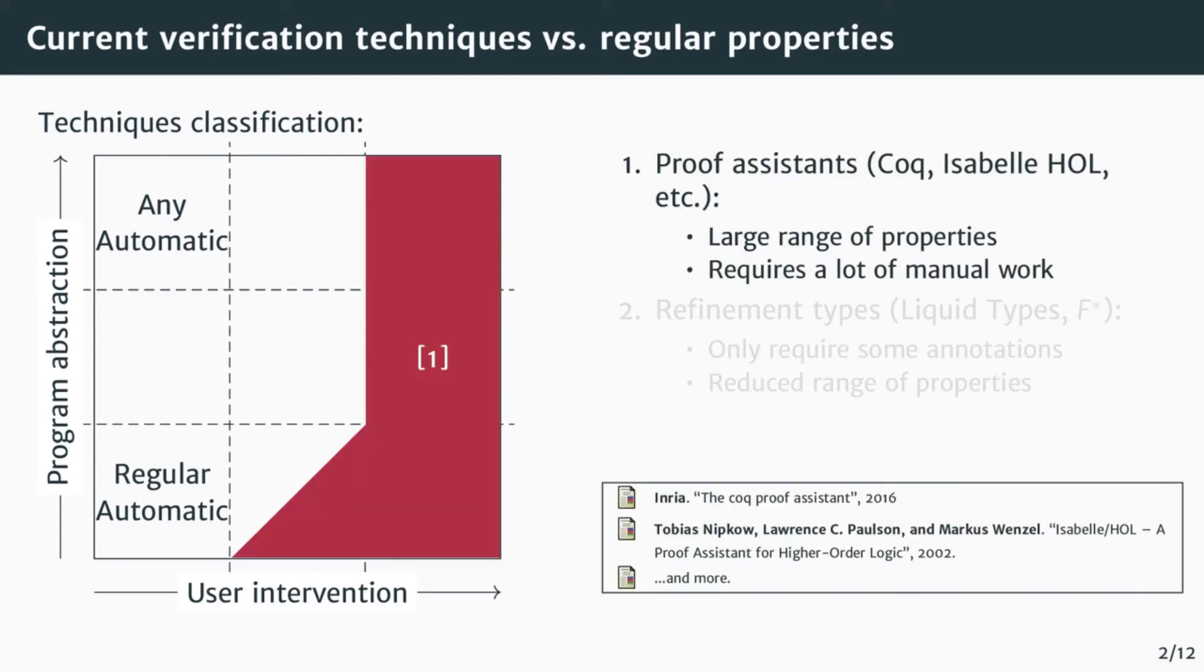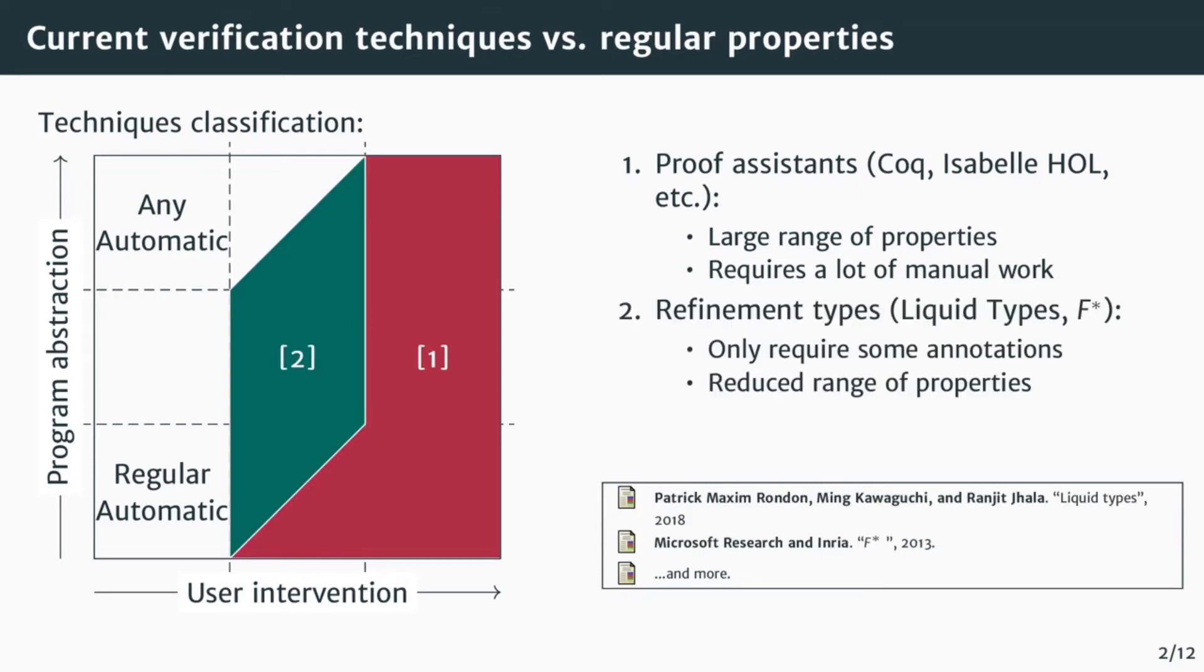Proof assistants such as Coq or Isabelle HOL can be placed in this region. They can verify a large range of properties, but require a lot of manual work. Refinement types inference techniques, which can be seen in liquid types or F-star, require less manual work. The user only need to give some hints, usually as program type annotation. However, the range of verifiable properties is reduced.